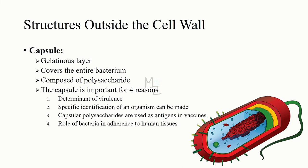Now we are going to talk about structures outside the cell wall, starting with the capsule. The capsule is a gelatinous layer covering the entire bacterium, typically composed of polysaccharide whose sugar components vary from one species to another. The capsule is important for four reasons: it is a determinant of virulence (i.e., the severity of disease); specific identification of an organism can be made using antiserum against capsular polysaccharides; capsular polysaccharides are used as antigens in certain vaccines because they elicit protective antibodies; and the capsule may play a role in the adherence of bacteria to human tissues, an important initial step in causing infection.